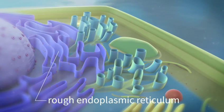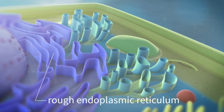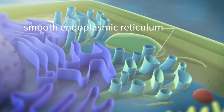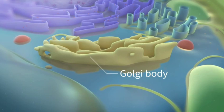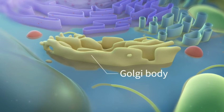One of them is the endoplasmic reticulum. It has the shape of a labyrinth surrounding the nucleus. One part of the ER is called rough, and the other, smooth endoplasmic reticulum. The Golgi body is the cell repository. The substances produced in it are stored there and then transported to other parts of the cell.